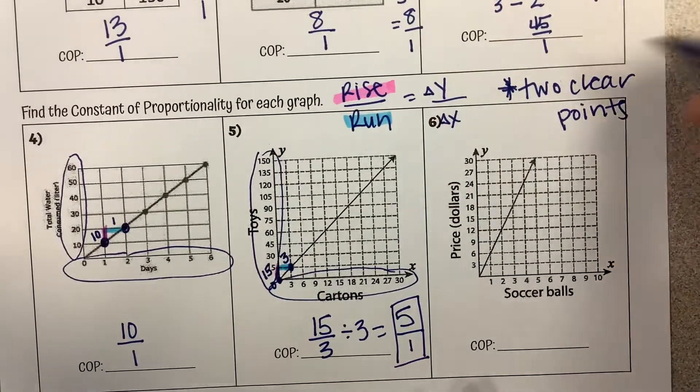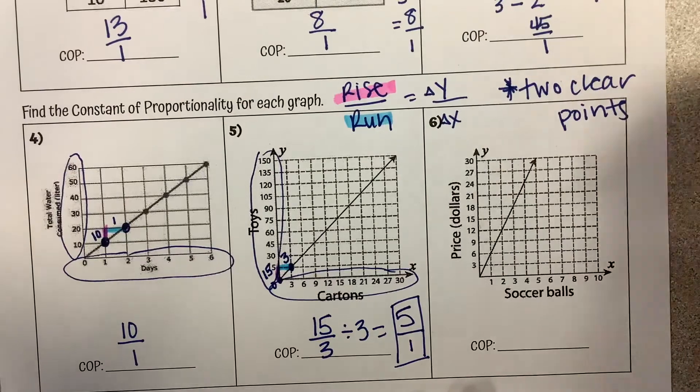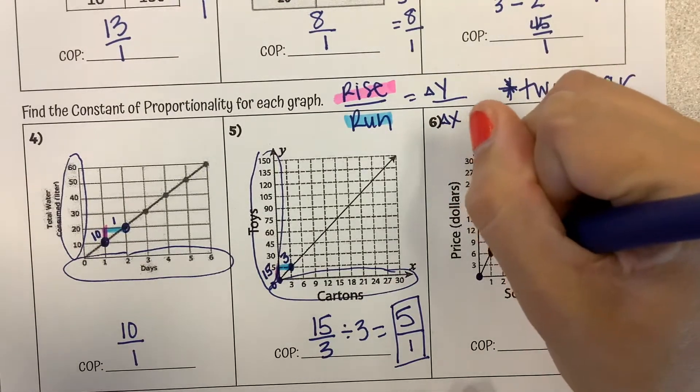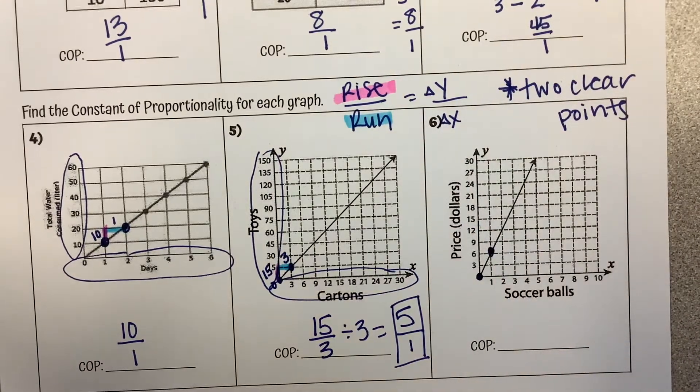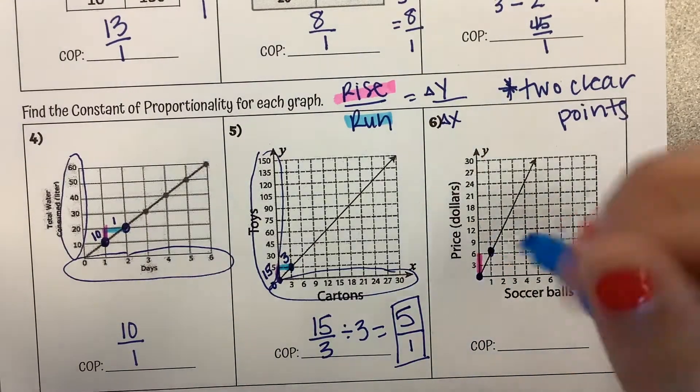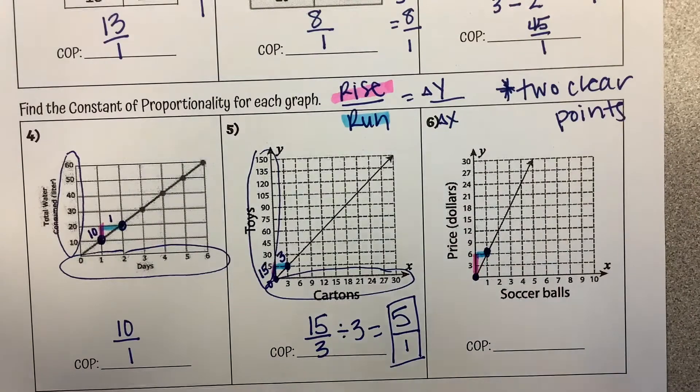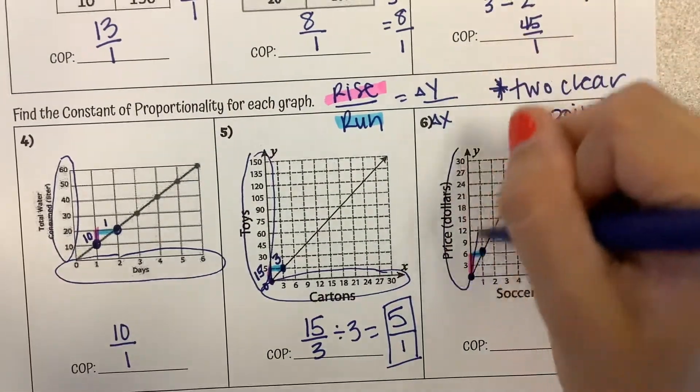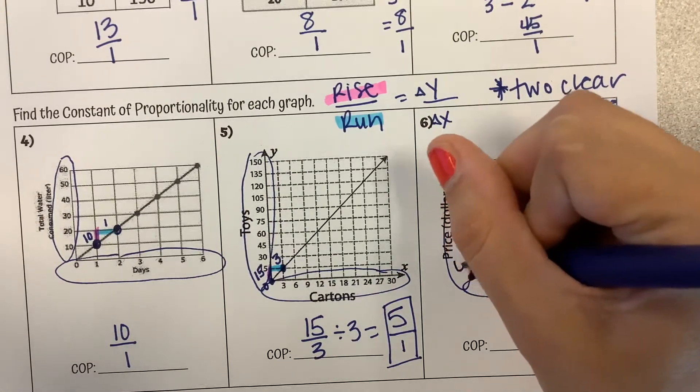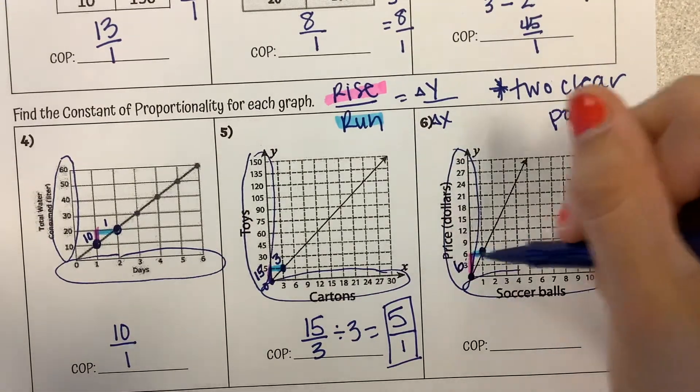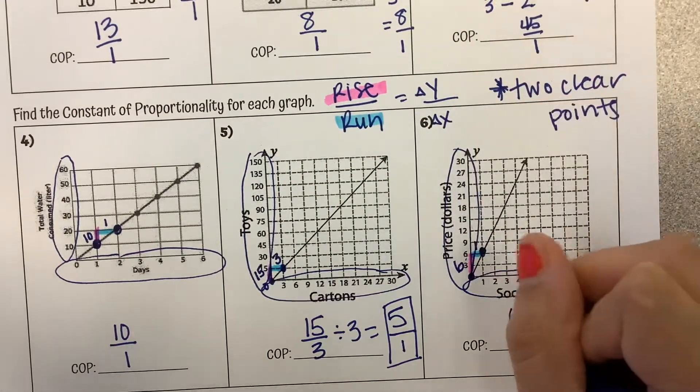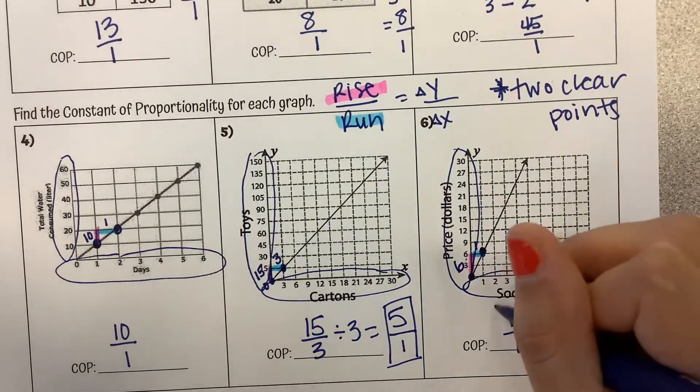And then last graph example here. I'm picking two clear points. Looks like it intersects here and looks like right here would be a clear point. So I'm looking again for my rise over my run. I'm paying close attention to my axes. So our vertical rise goes from 0 to 6. So that's a rise of 6. Our horizontal rise goes from 0 to 1. So the constant of proportionality is 6 over 1.